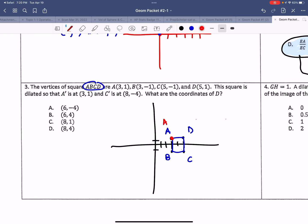So that's also A prime, and C prime is (8,-4). So 5, 6, 7, 8, negative 4, 1, 2, 3, 4, C prime. Then our new shape went from 2 wide to 2, 3, 4, 5 wide, right? So this has a scale factor of 5 halves. What are the coordinates of D? Well, I've pretty much drawn it here.